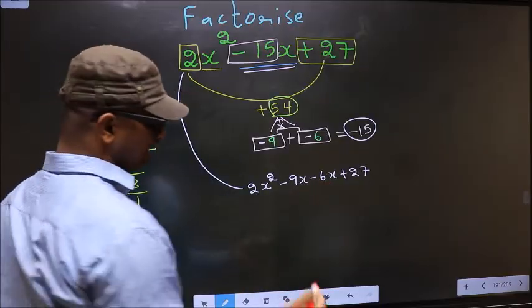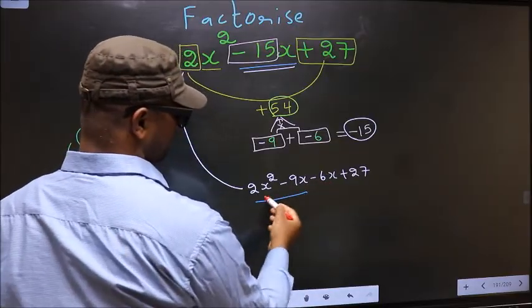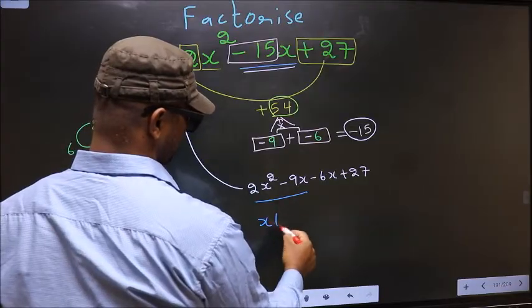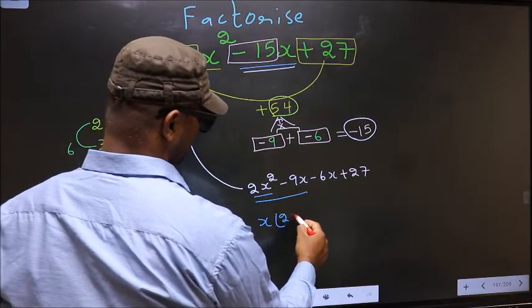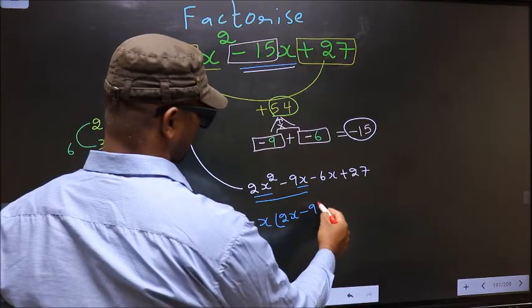Next. Now from these 2 terms, what can be taken out common is x. So here you get 2x minus from this, x out, you get 9.